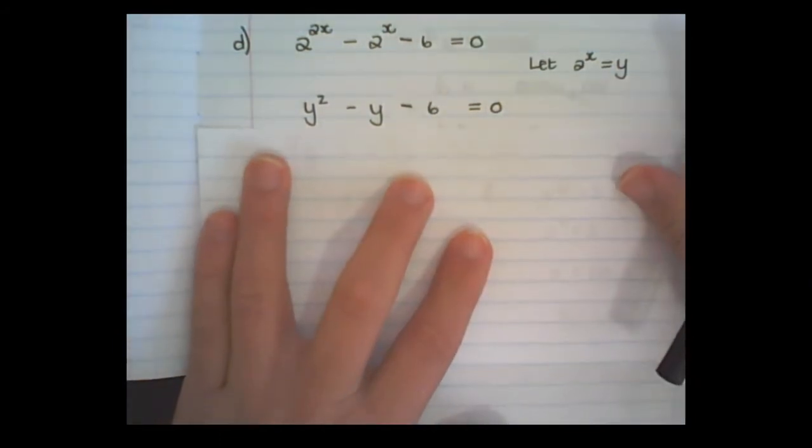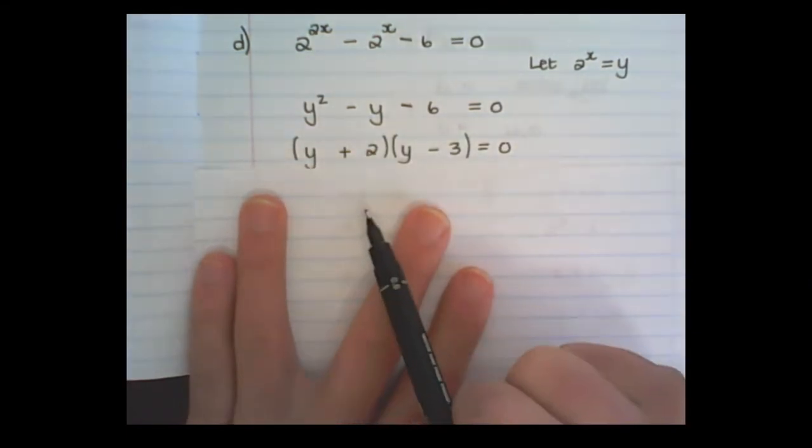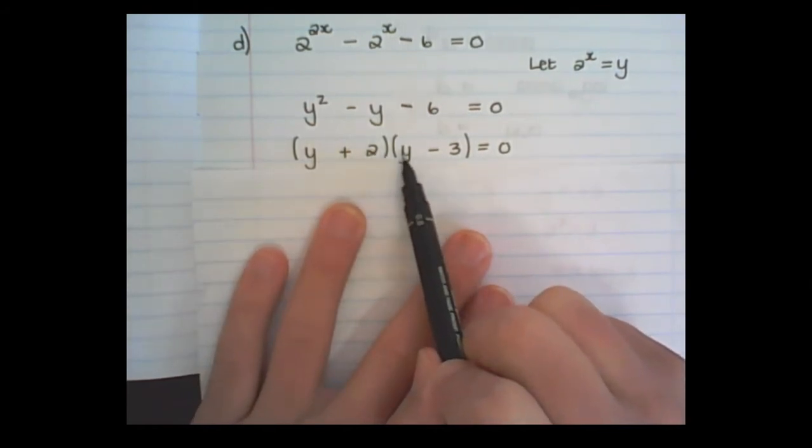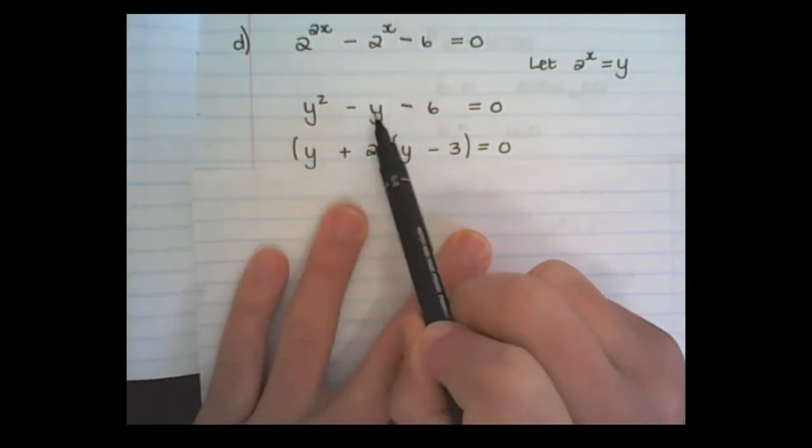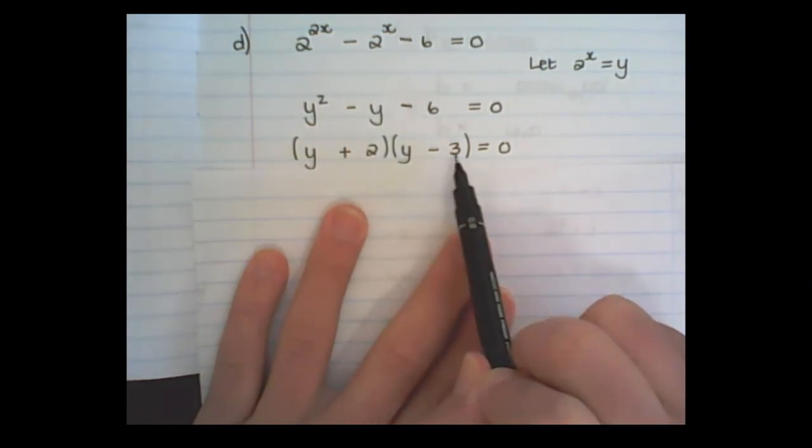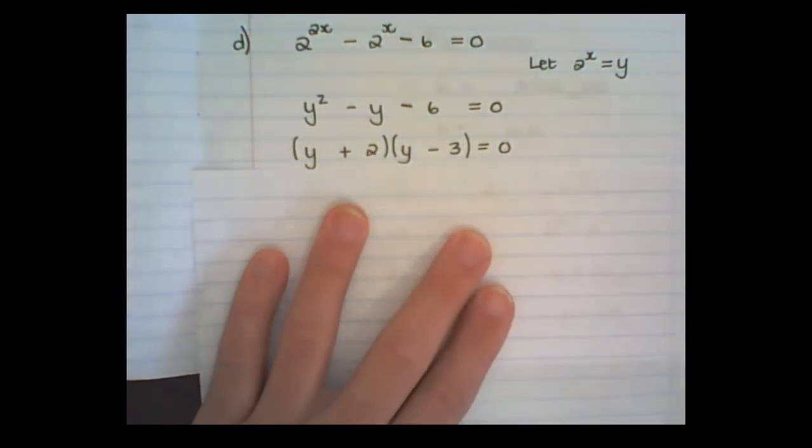Now, I am going to factorize. Remember when you factorize, to test your factorization. So, 2y minus 3y produces a negative y. A positive 2 times a negative 3 produces negative 6. So I know the factorization is correct.